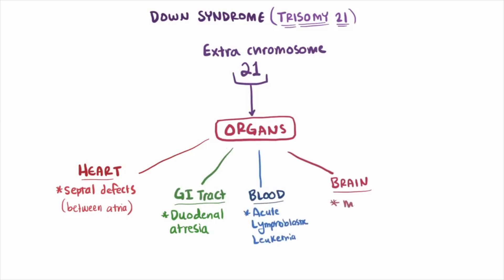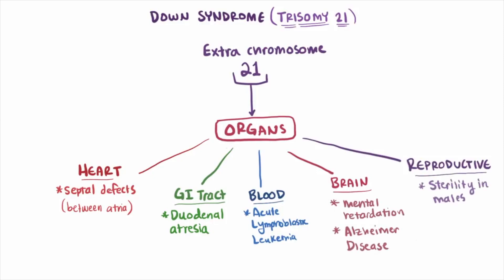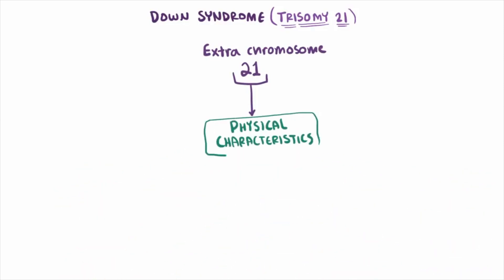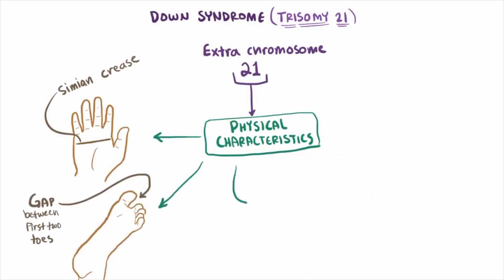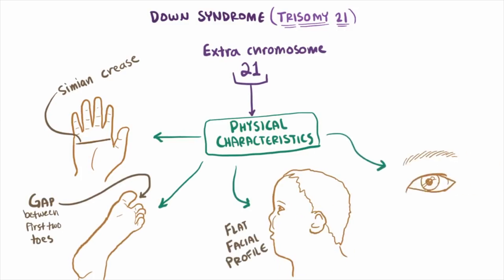Additional physical features of Down syndrome include a flattened face especially the bridge of the nose, almond-shaped eyes that slant up, tiny white spots on the irises of the eye, a single line across the palm of the hand, and poor muscle tone or loose joints. Although individuals with chromosomal disorders are born with them, it doesn't mean that they inherited the disease from their parents. The mutations that lead to chromosomal abnormalities occur randomly and are only uncorrected when we age or when we are stressed.